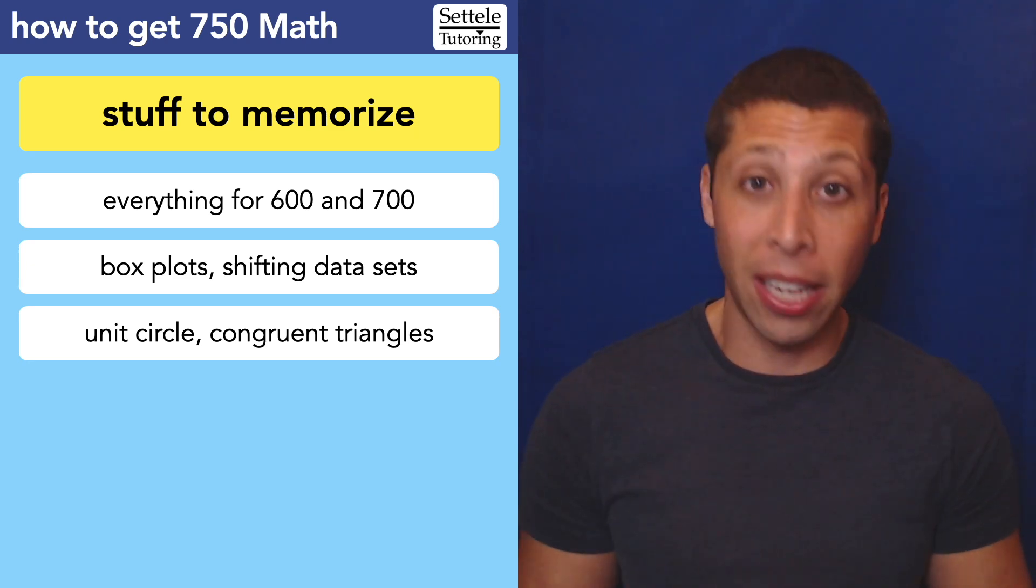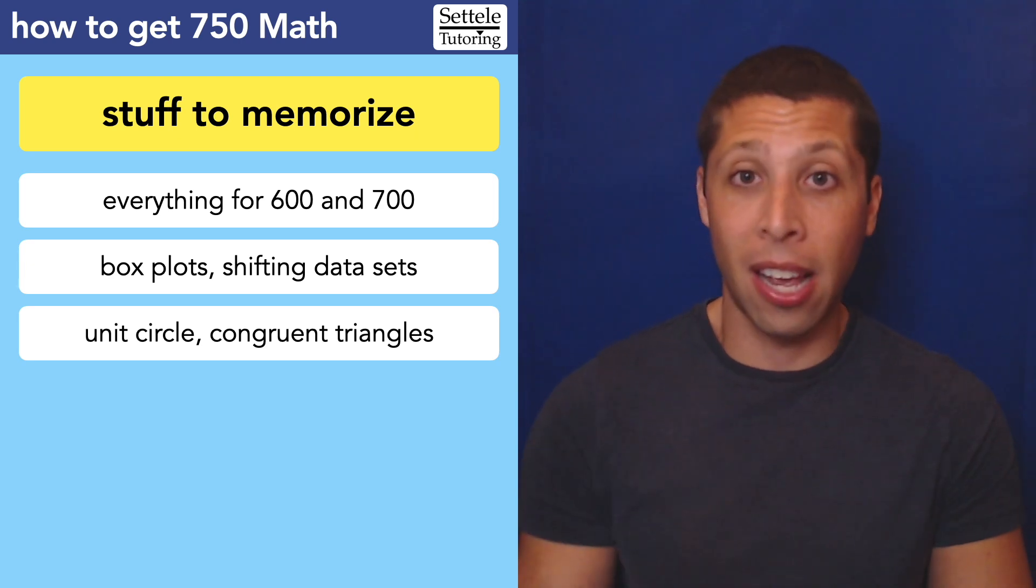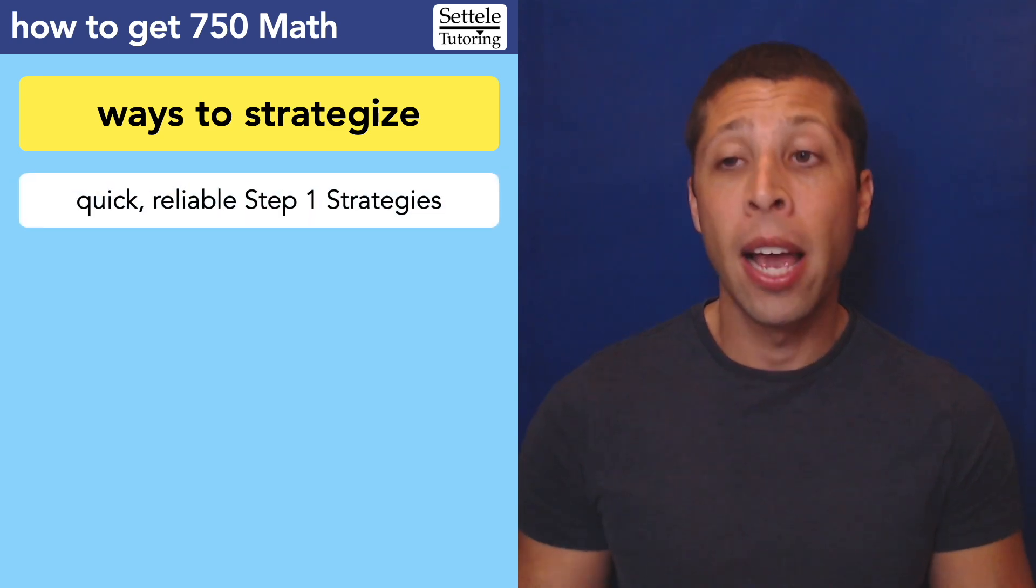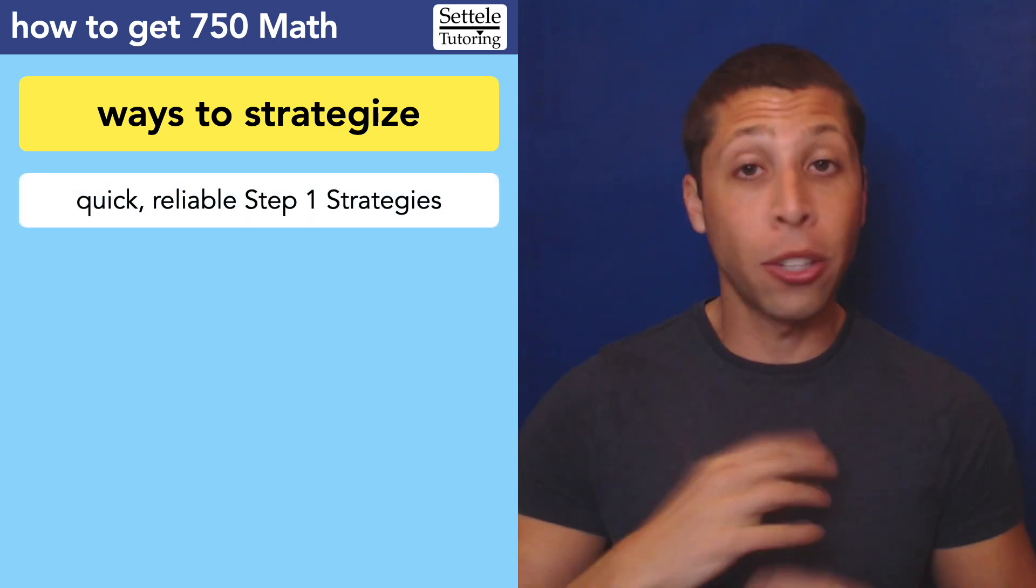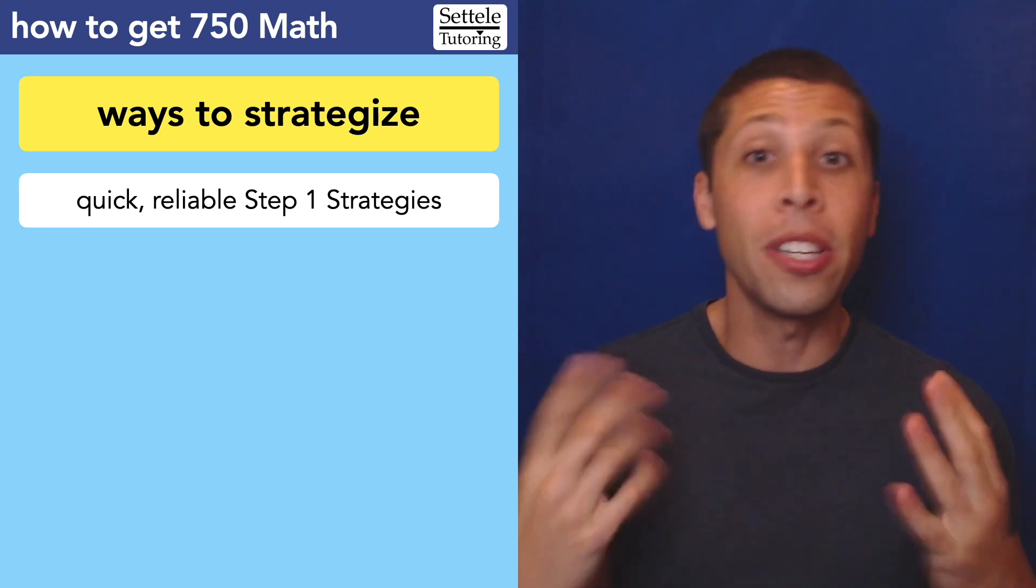But I can't really think of anything else. Everything else you probably would have dealt with along the way. And now it is time to make sure our strategies are great. And the most important thing for getting a 750 is we need quick, reliable step one strategies. So I talk about these all the time. Things like plug points into equations, arithmetize, using Desmos, in geometry, drawing radiuses, making triangles.